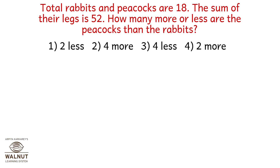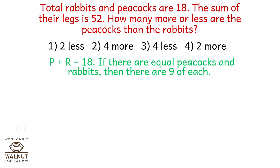Total rabbits and peacocks are 18. The sum of their legs is 52. How many more or less are the peacocks than the rabbits? Let's call peacocks P and rabbits R. When we add P plus R we have 18.